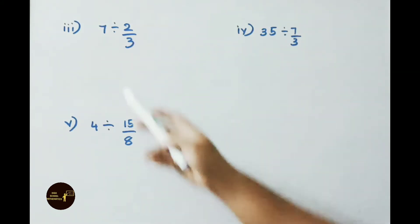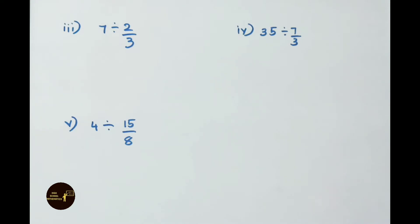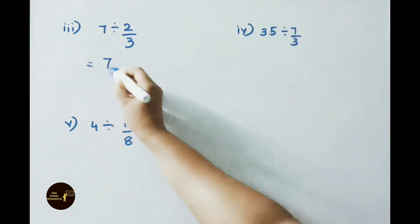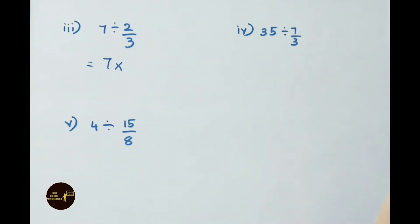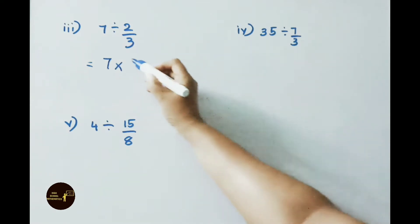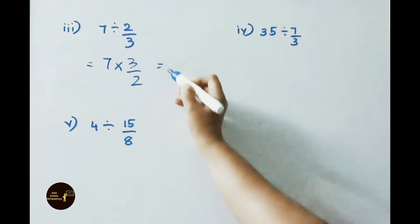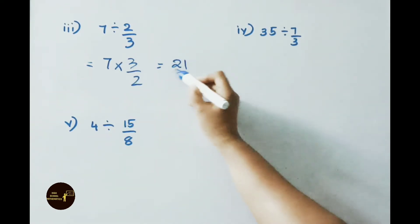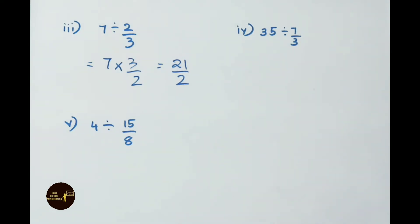See the third question now: 7 divided by 2/3. That equals to 7 × reciprocal of 2/3, which is 3/2. Now multiply numerators: 7 × 3 = 21, by denominator 2. So the answer is 21/2.